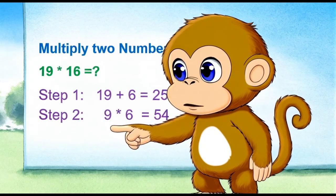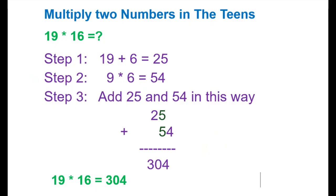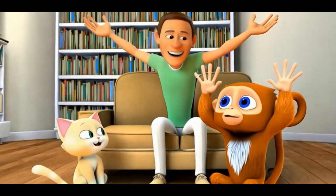I will work on the third step. Add the results of step 1 and step 2. Line up the one's place of 25 and 10's place of 54, which is 304.